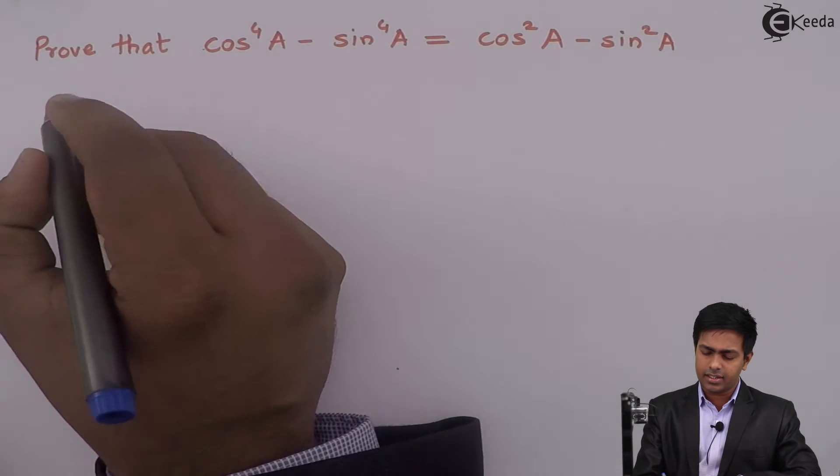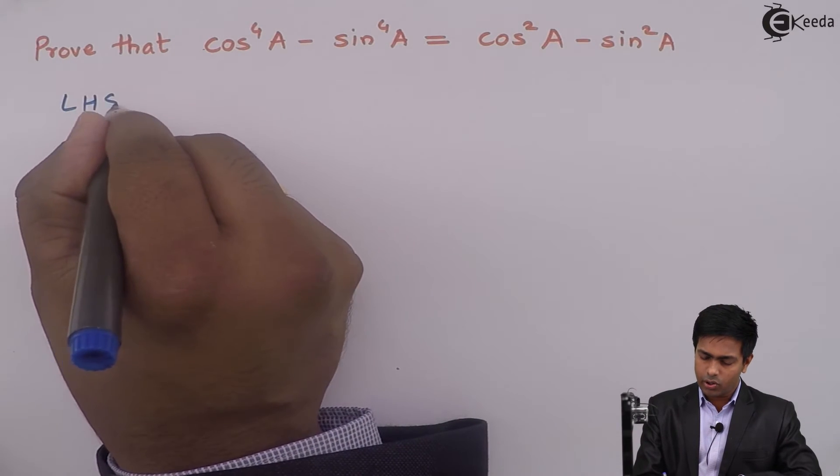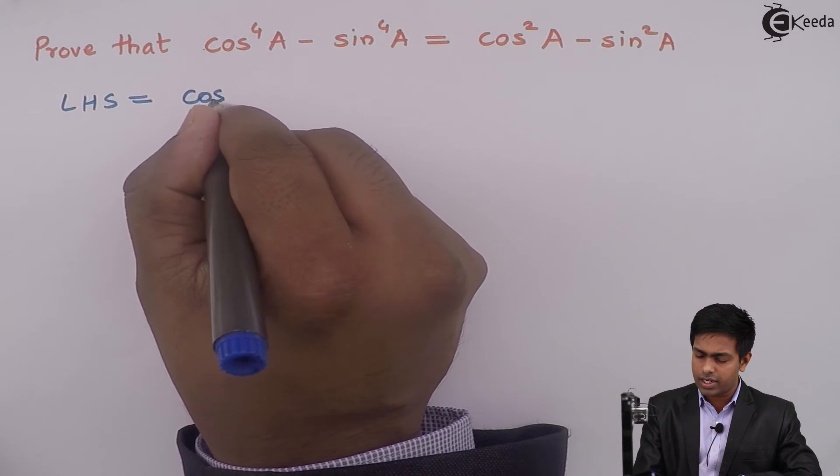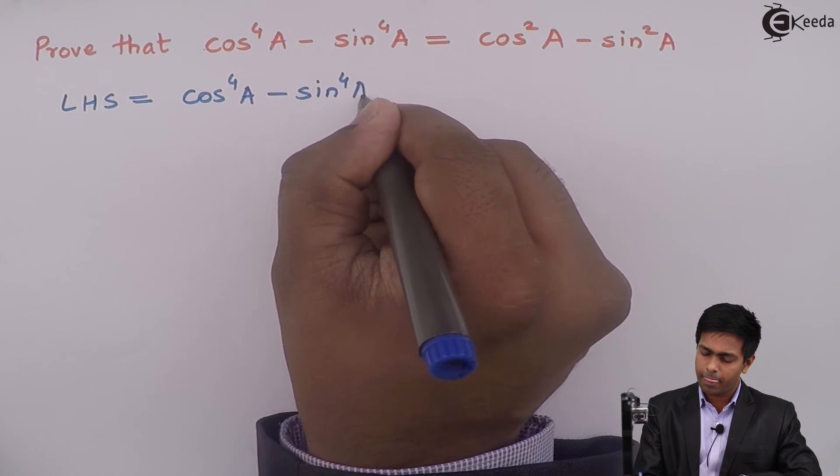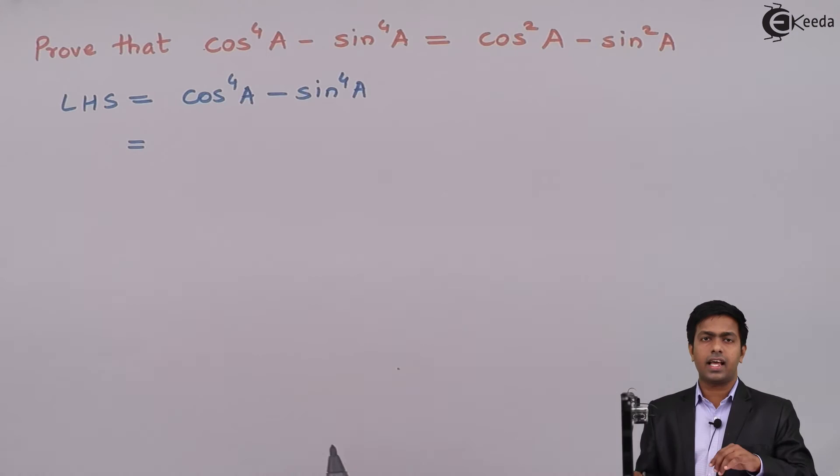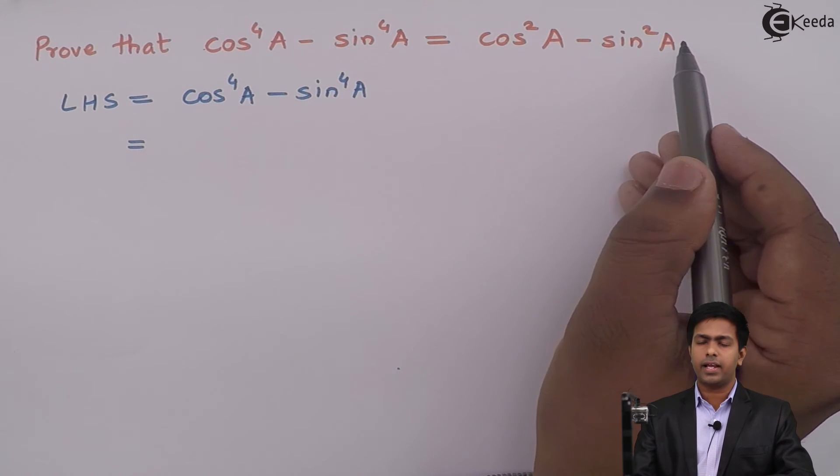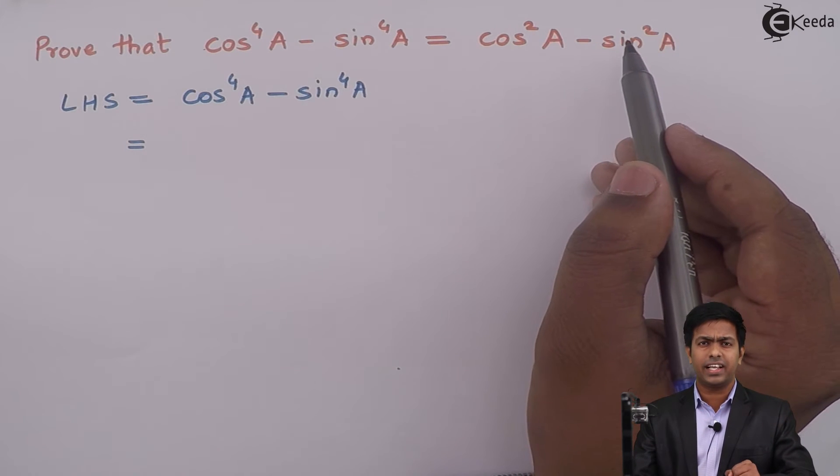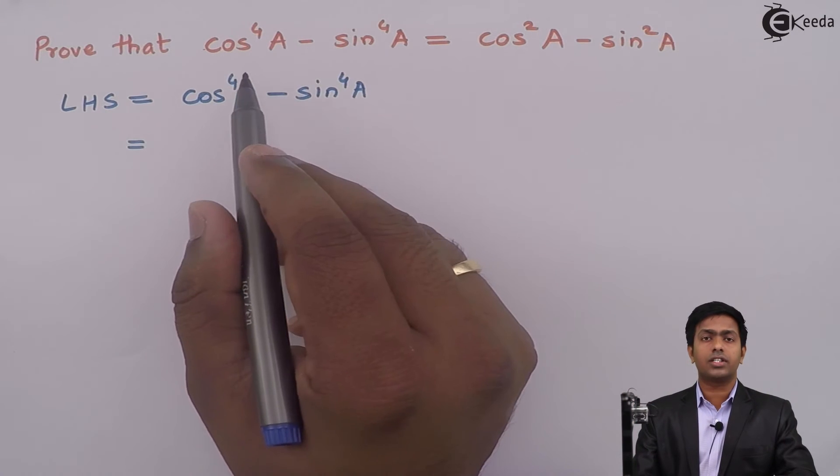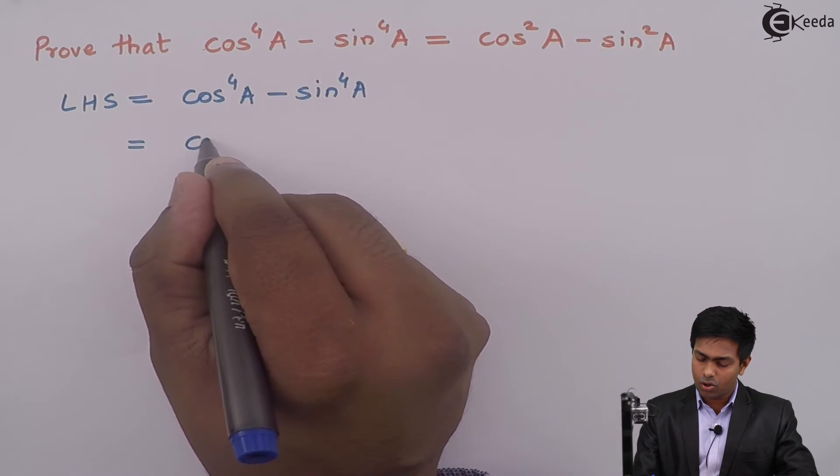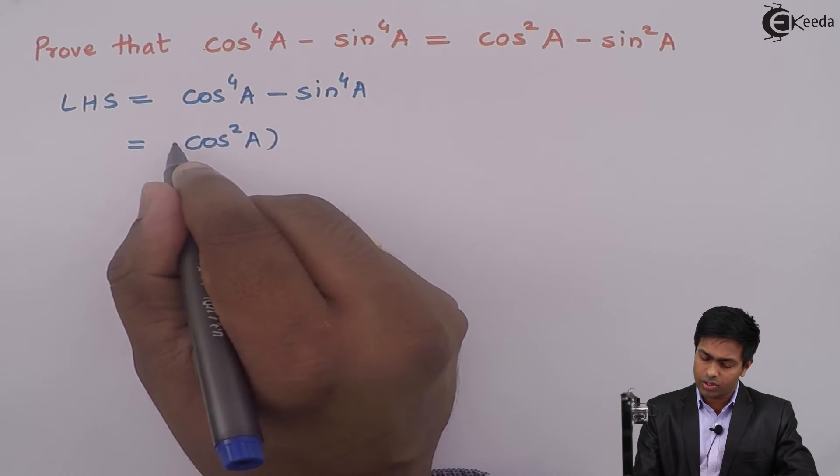So here I will start with LHS. So on LHS, we have cos raised to 4A minus sin raised to 4A. Now, since I want right hand side as cos square A minus sin square A, I need to reduce the degree. So what I will do is,